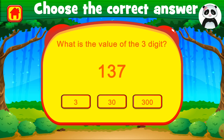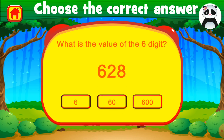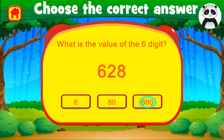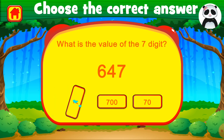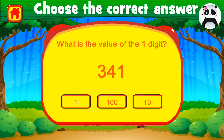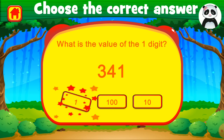What is the value of the three digit? The value of the three digit is 30. Right on. What is the value of the six digit? The value of the six digit is 600. Excellent. What is the value of the seven digit? The value of the seven digit is 7. What is the value of the 1 digit? The value of the 1 digit is 1. Brilliant. Thank you.